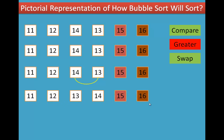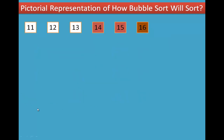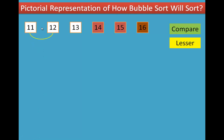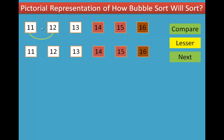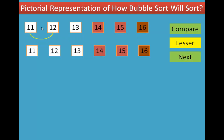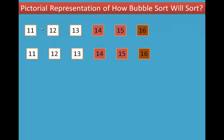The sorted result so far: 11, 12, 13, 14, 15, 16. Now, comparing 3 numbers — 11 and 12 compare. Same — lesser. Then 12 and 13 compare — lesser.